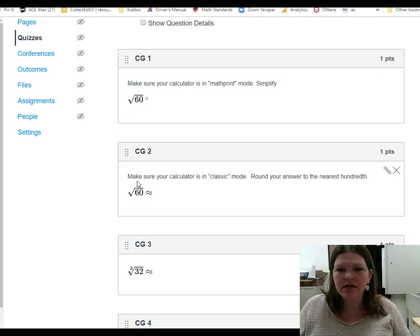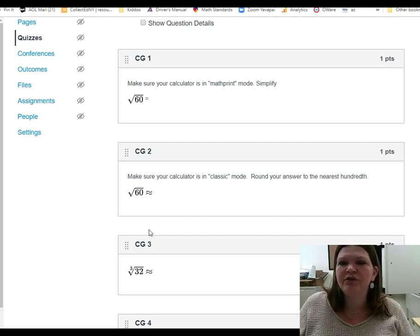Number two says to do the square root of 60 again. You might be thinking, well, what in the heck? Why am I doing the square root of 60 two different times?